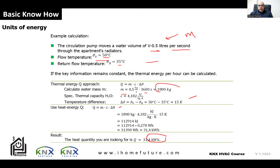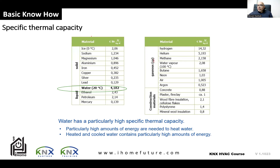You don't need to memorize these calculations for field work, but you need to understand the basics — what Kelvin, Celsius, and Fahrenheit mean and how they differ. The specific thermal capacity table shows that water has a very high thermal capacity of 4.182, meaning it can store more energy than most other materials — it can contain a particularly high amount of energy.